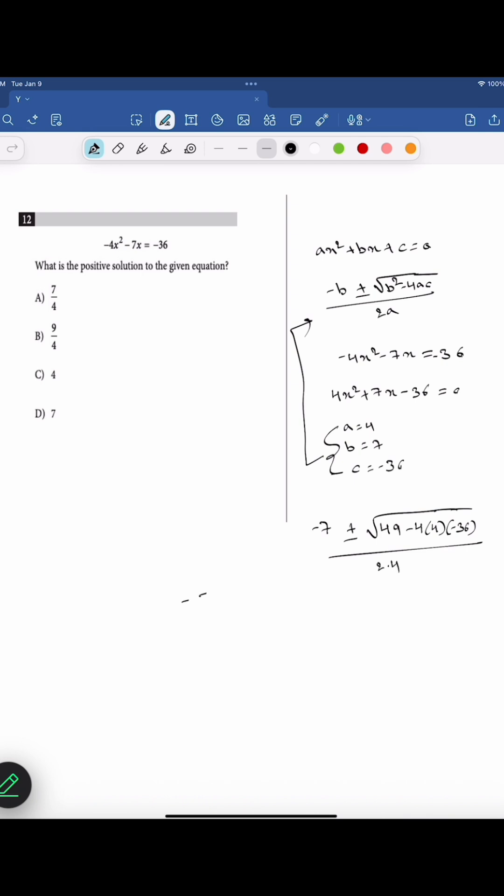If we solve the root value first, minus 7 plus or minus square root of 49 plus 576 divided by 8, which is minus 7 plus or minus square root of 625 divided by 8. So, minus 7 plus or minus 25 divided by 8.